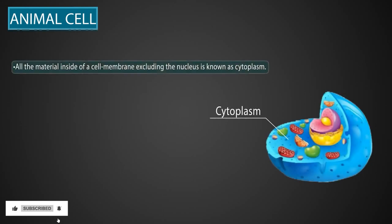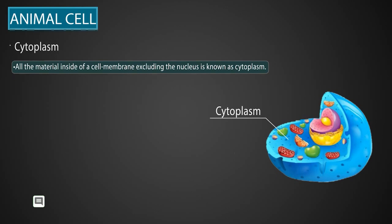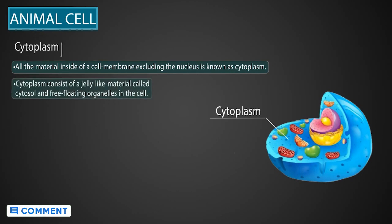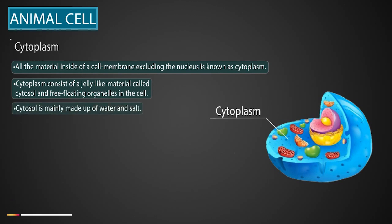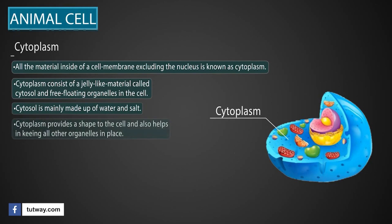All the material inside of the cell membrane, excluding the nucleus, is known as cytoplasm. The cytoplasm consists of the jelly-like material called cytosol, and free-floating organelles in the cell. Cytosol is a liquid material made up of water and salt. Cytoplasm provides a shape to the cell, and also helps in keeping all other organelles in place.